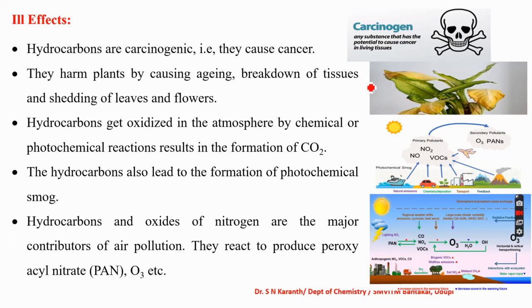Another ill effect is the pale yellow color of leaves of trees and plants. Hydrocarbons harm plants by causing aging, breakdown of tissues, and shedding of leaves and flowers. Even the hydrocarbon gets oxidized in the atmosphere by chemical or photochemical reactions, resulting in the formation of carbon dioxide, which is a health hazard. Hydrocarbons also lead to the formation of photochemical smog, and as the atmosphere contains oxides of nitrogen and volatile organic components, they can form secondary air pollutants like PAN — peroxyacetyl nitrate.